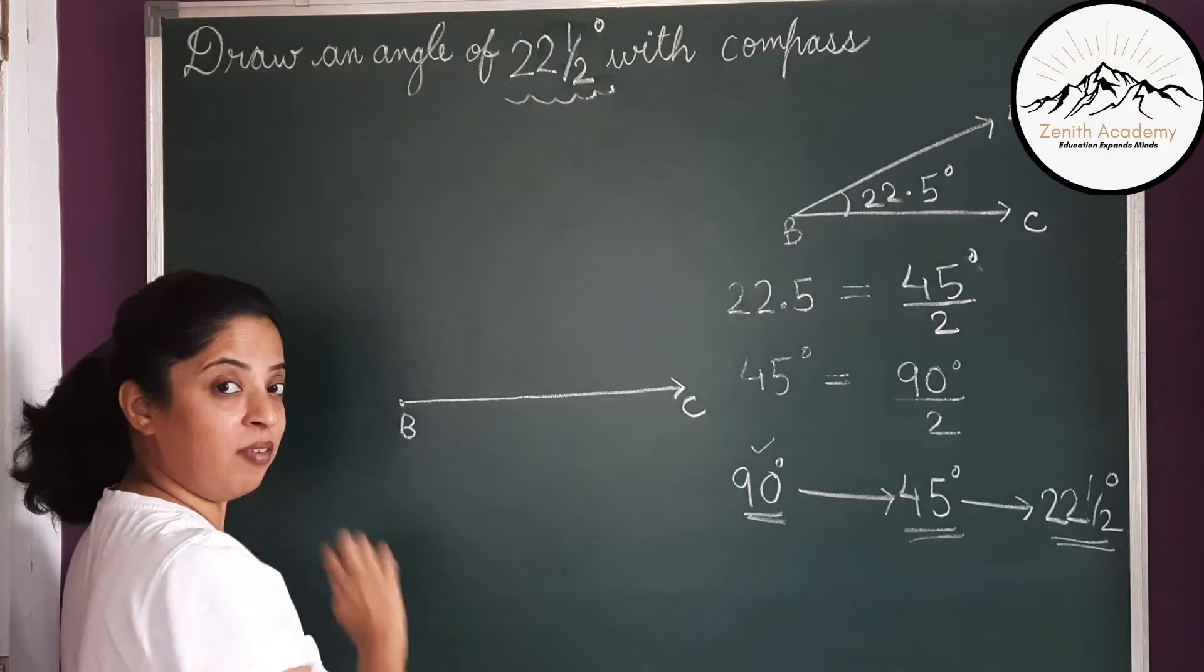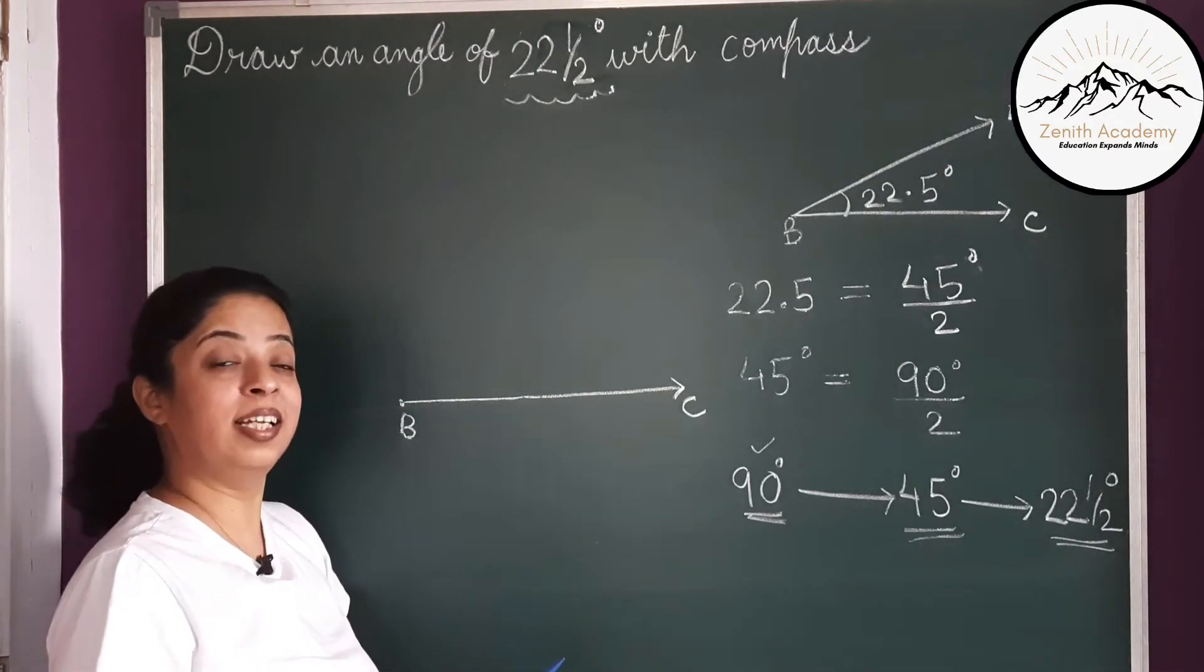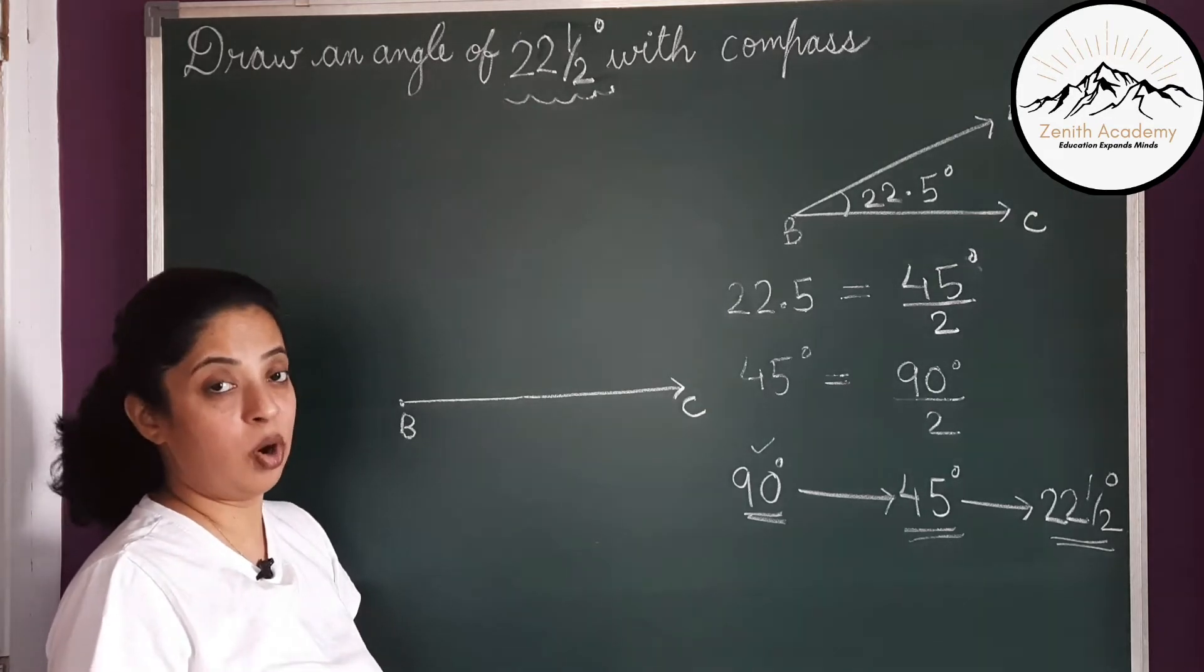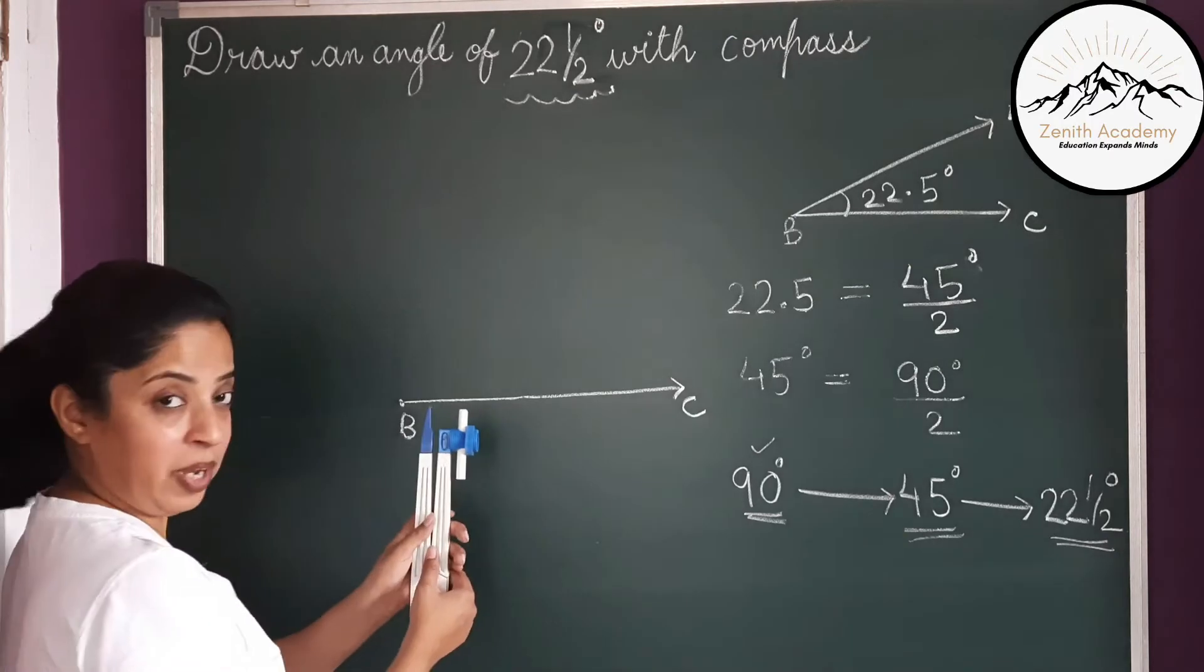Now at B I will first draw 90 degree. We all know how to draw 90 degree. If you don't know how to draw 90 degree, please go and check my video of how to construct 90 degree using a compass. Here I will explain you again.